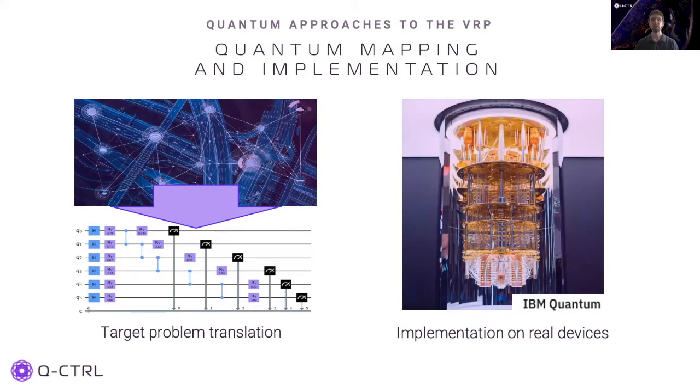Quantum optimization algorithms exploit the properties of quantum mechanics such that the calculation methods are fundamentally different from classical algorithms. For problems that are known to be hard for classical algorithms, quantum algorithms offer a different computing methodology with known or potential advantages. In the case of classical optimization problems, quantum annealing or variational quantum algorithms such as QAOA or quantum approximate optimization algorithms are promising computational candidates for combinatorial optimization problems such as the VRP.